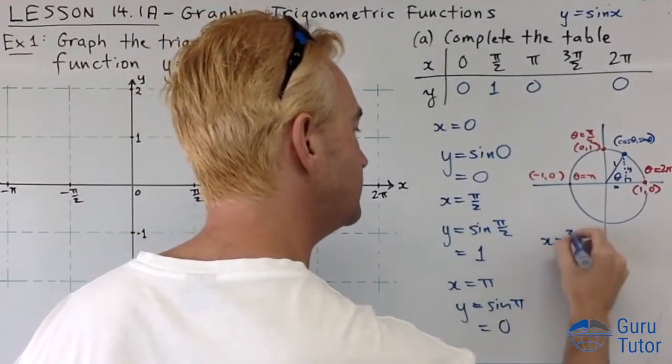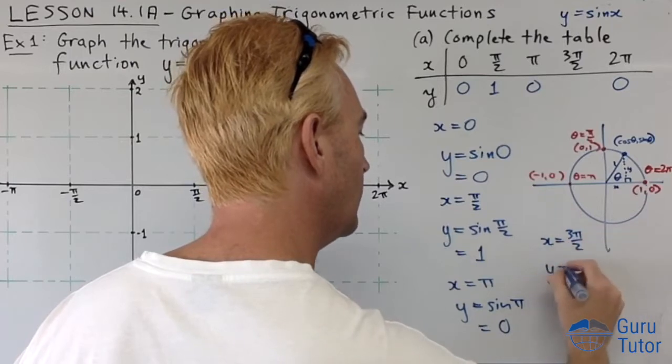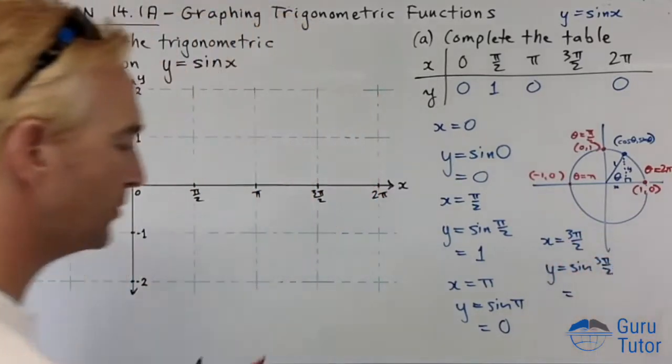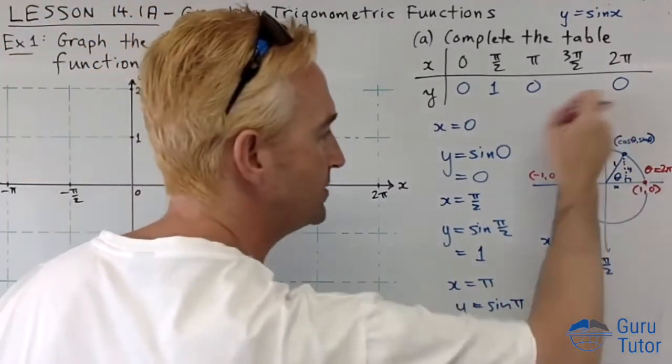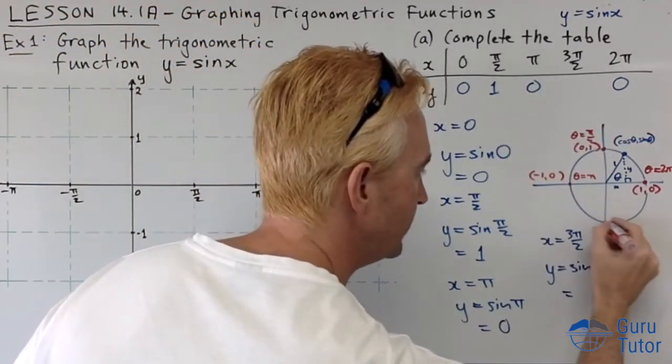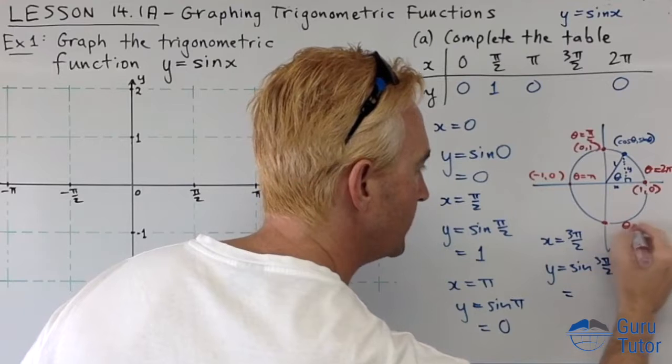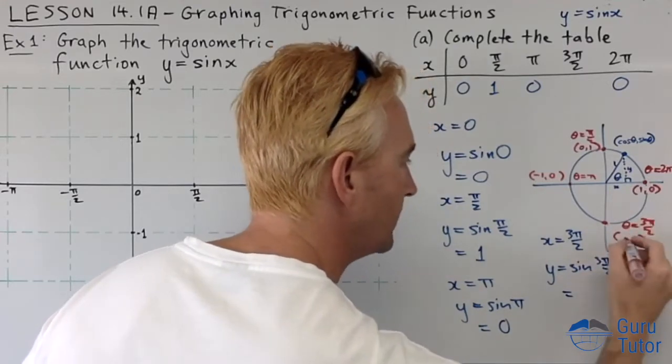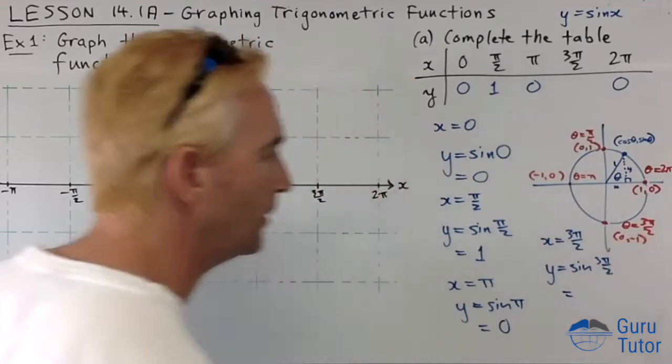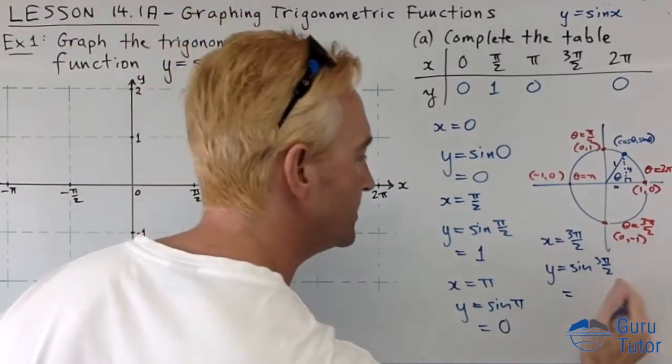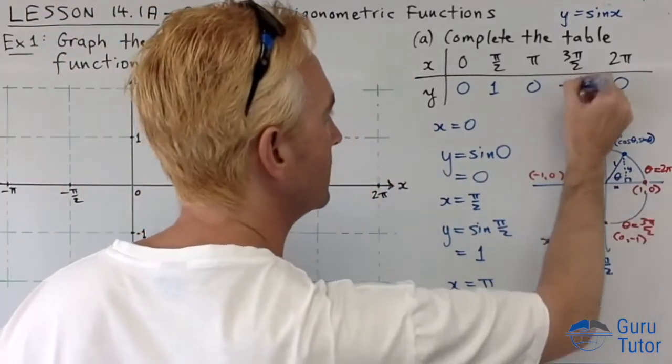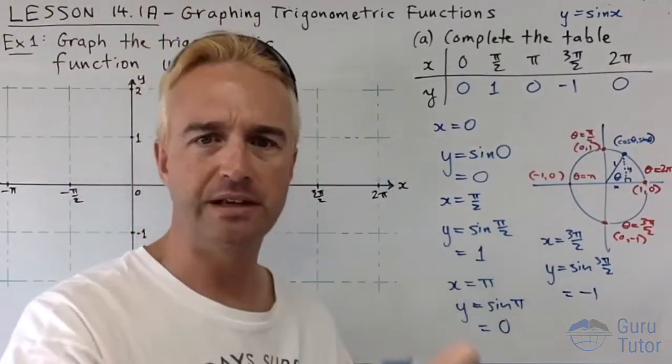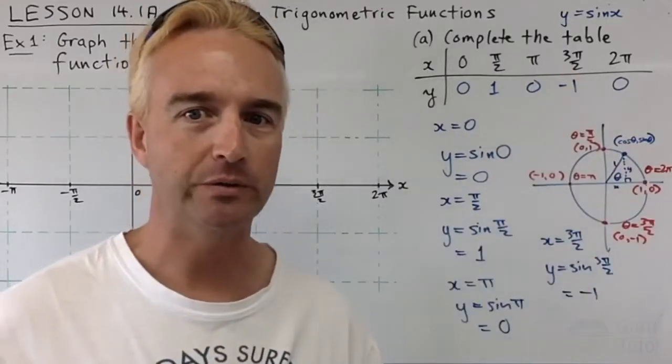When x is 3π/2, y equals sin 3π/2. What is sin 3π/2? Where is 3π/2? That is 270, which is down here. What are the coordinates? When theta is 3π/2, the coordinates are 0, negative 1. Sin is always the y coordinate, so it's minus 1. We get 0, 1, 0, minus 1, 0. So it's up, down, up, down. Really weird.